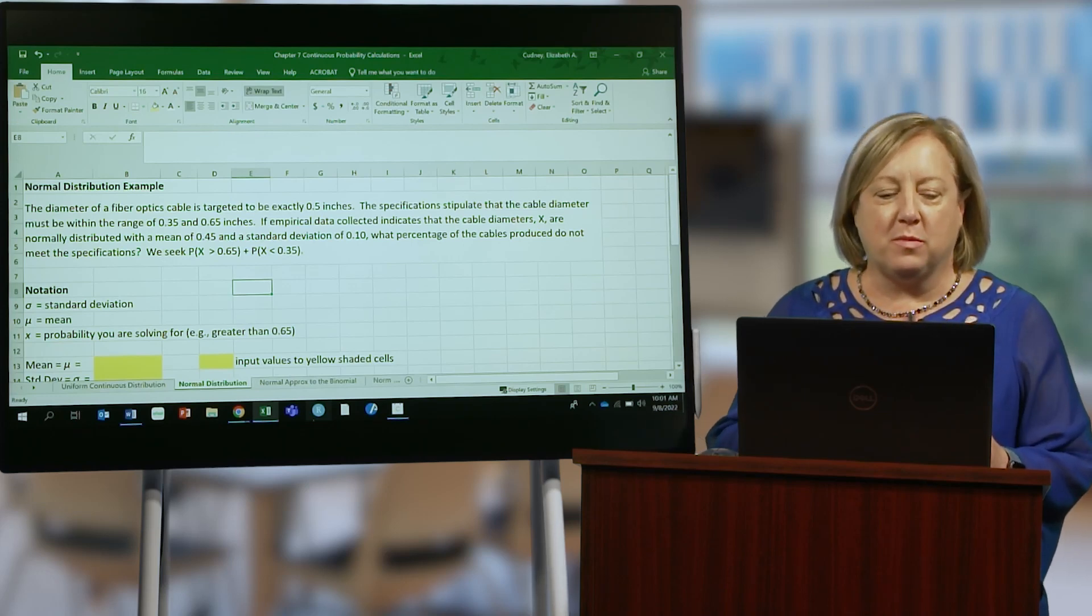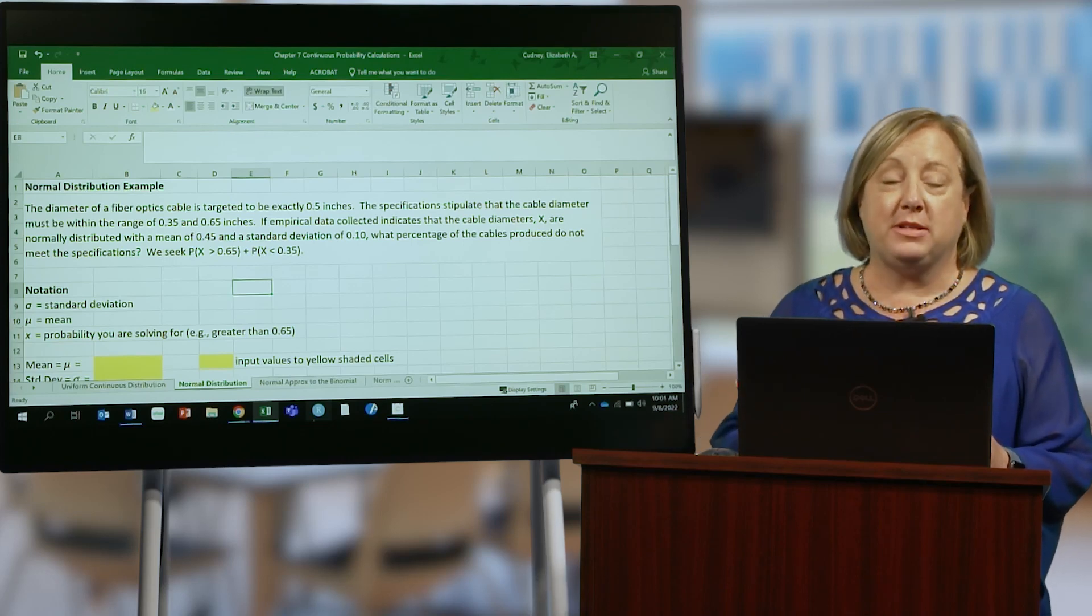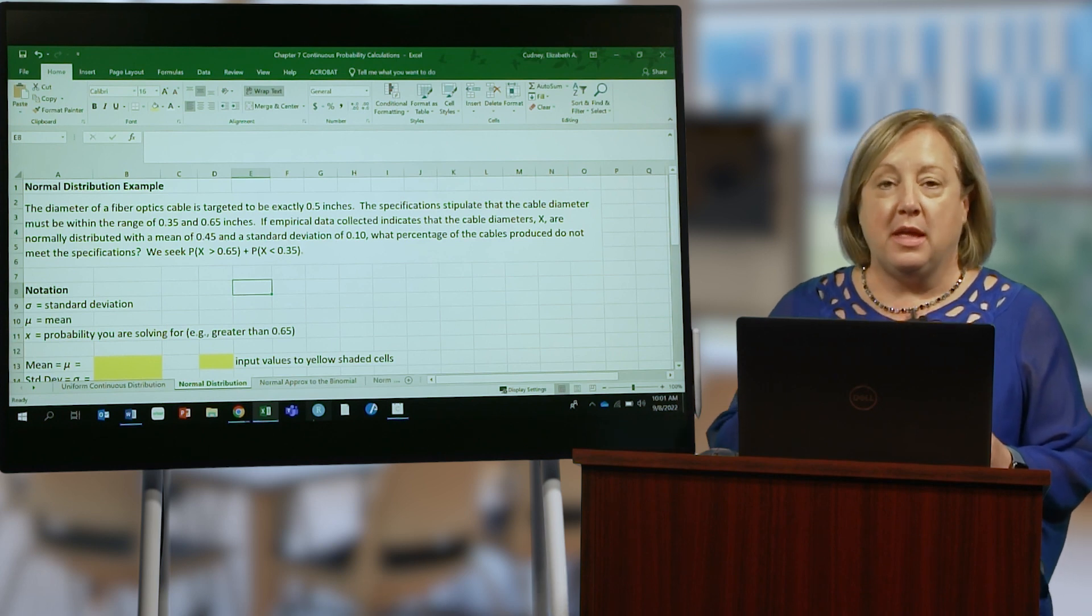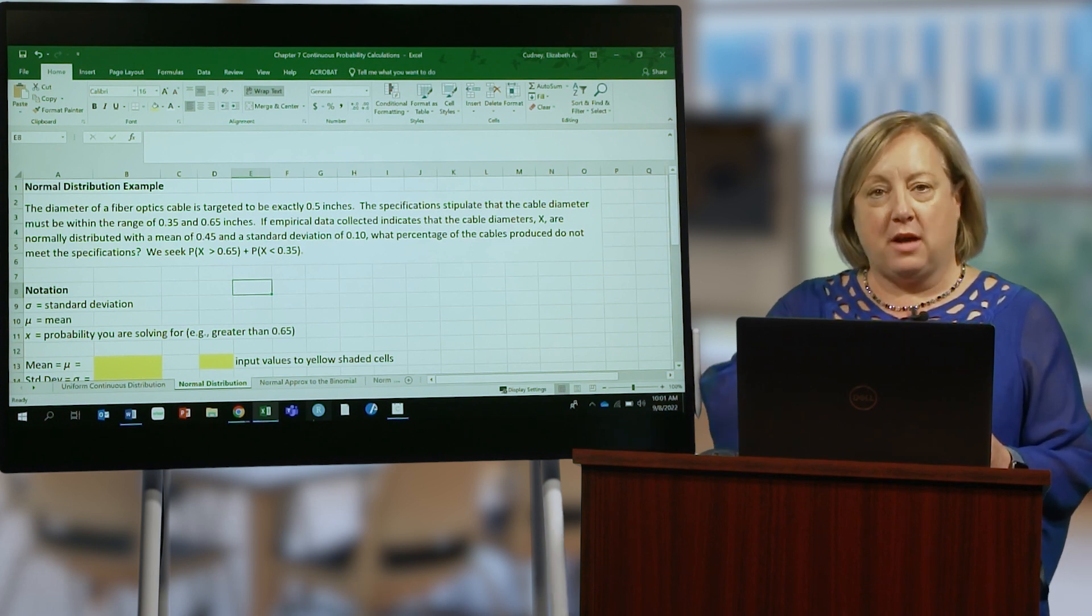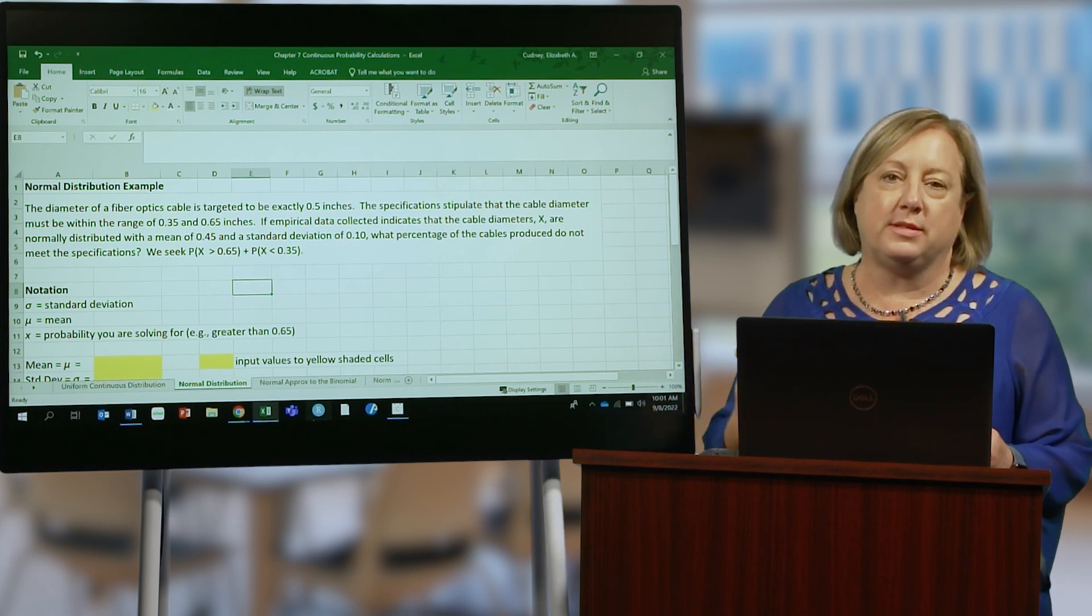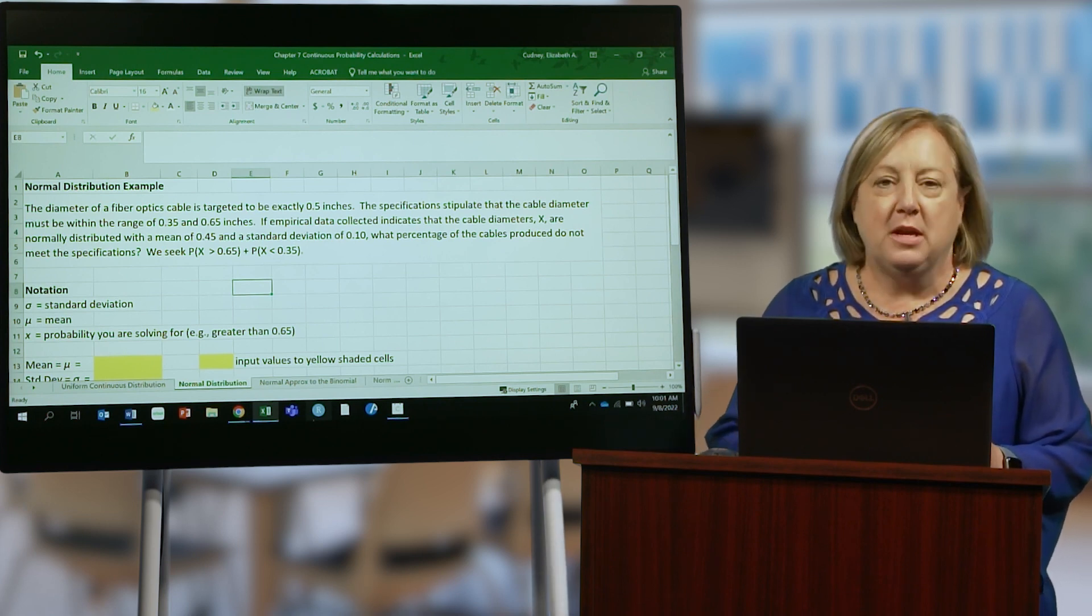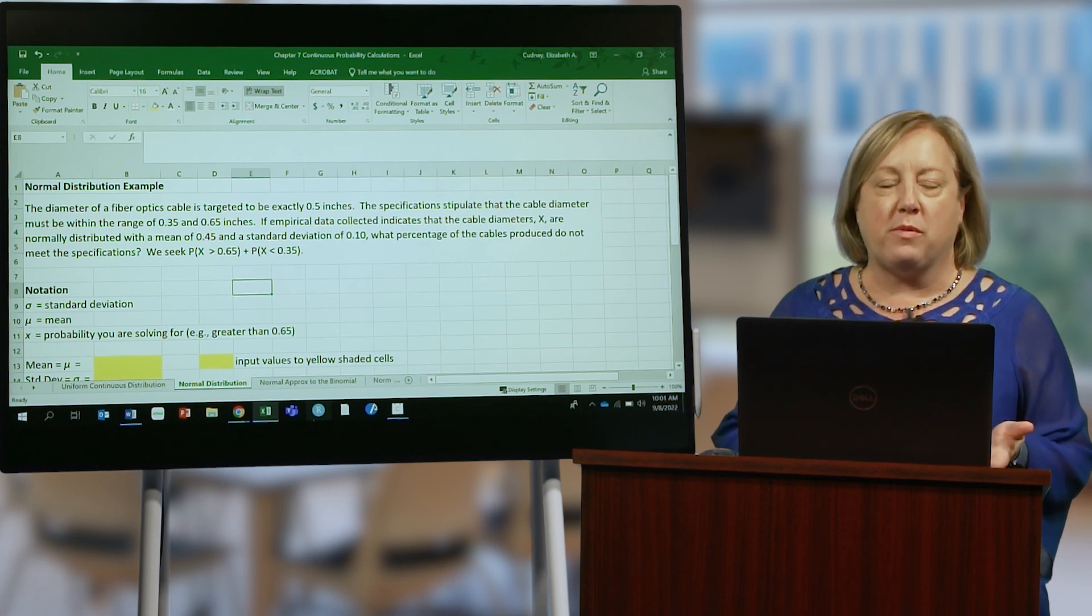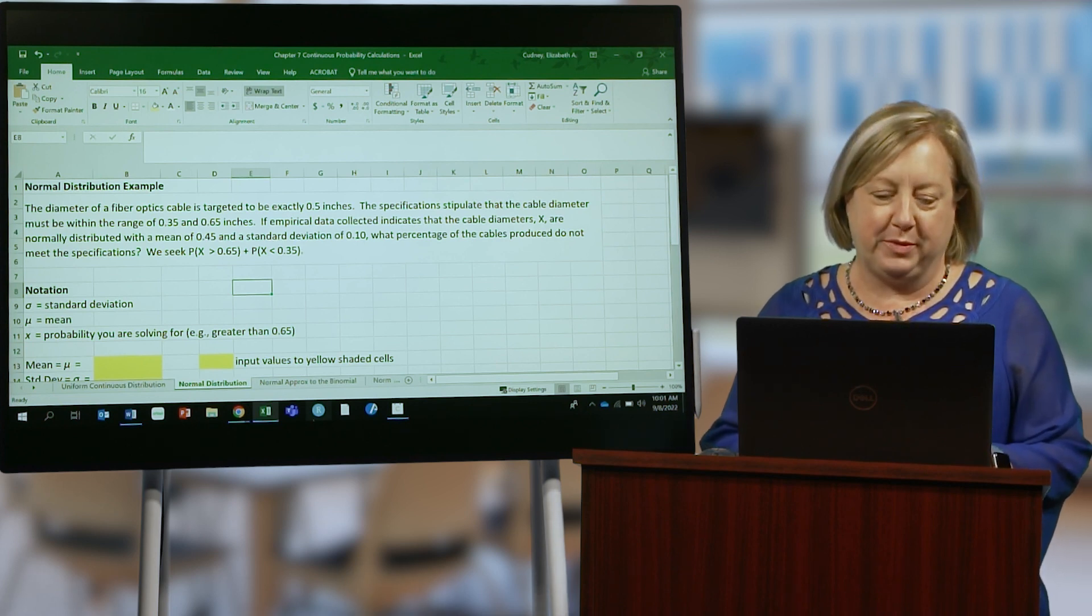In this video, we're going to talk about the normal distribution, which is the most common distribution that you're going to deal with in business. It's commonly referred to as the bell-shaped curve or the Gaussian distribution. Let's take a look at an example of how we would solve for probabilities using the normal distribution.